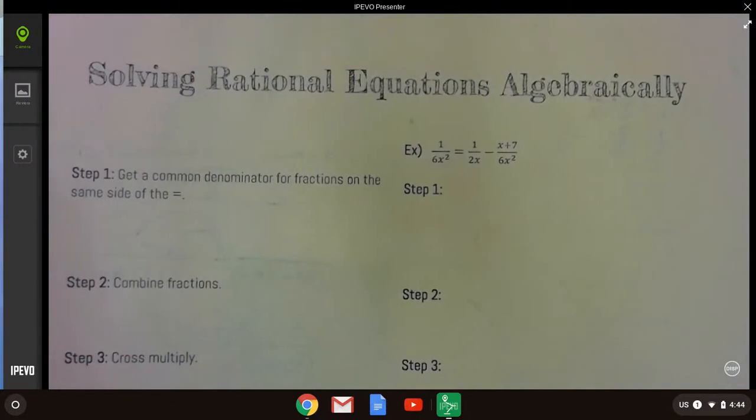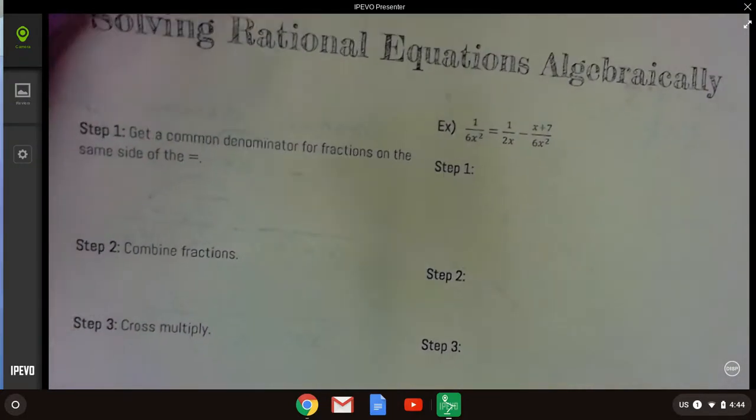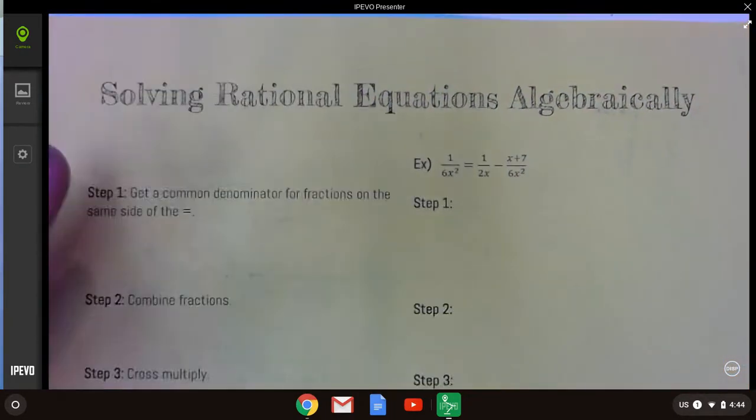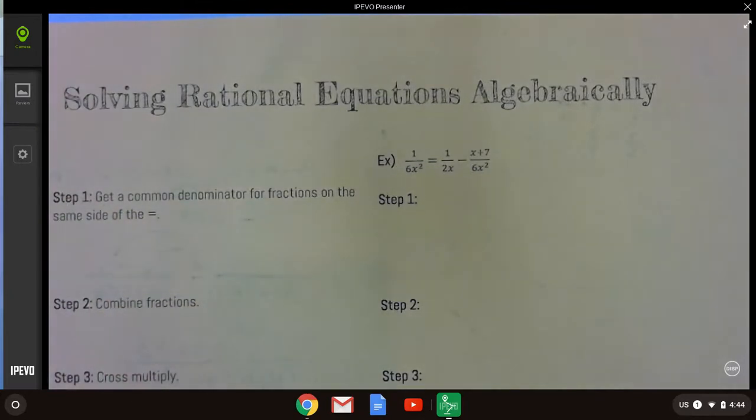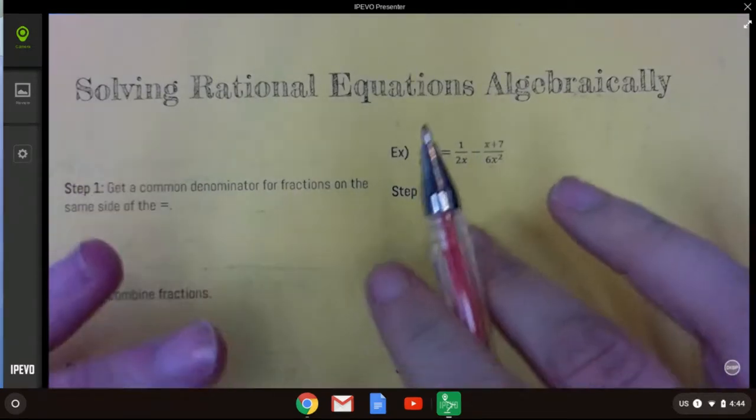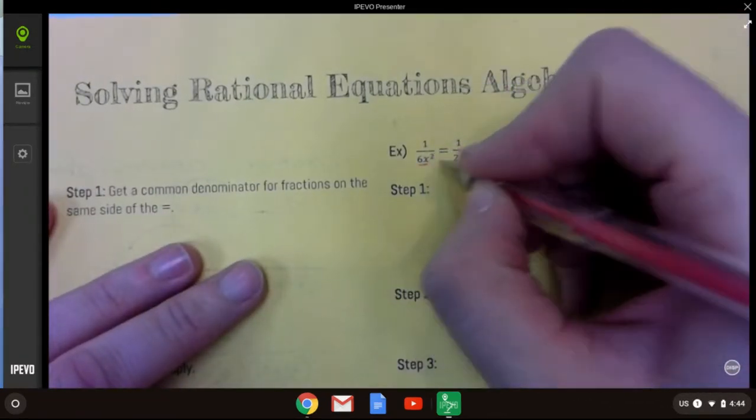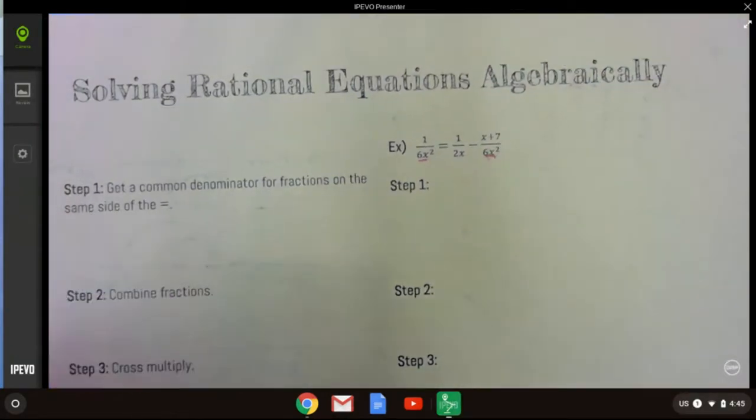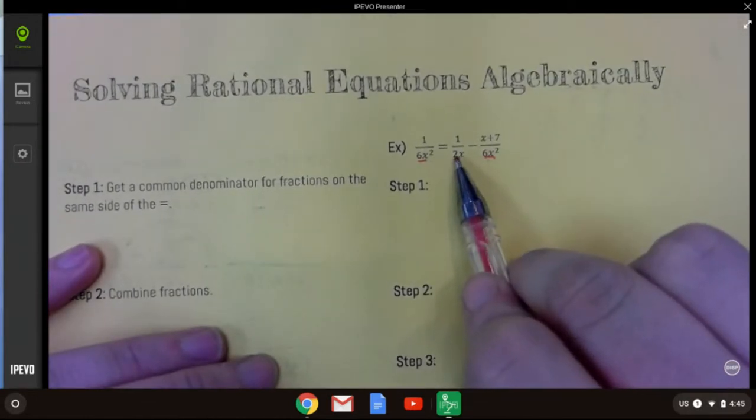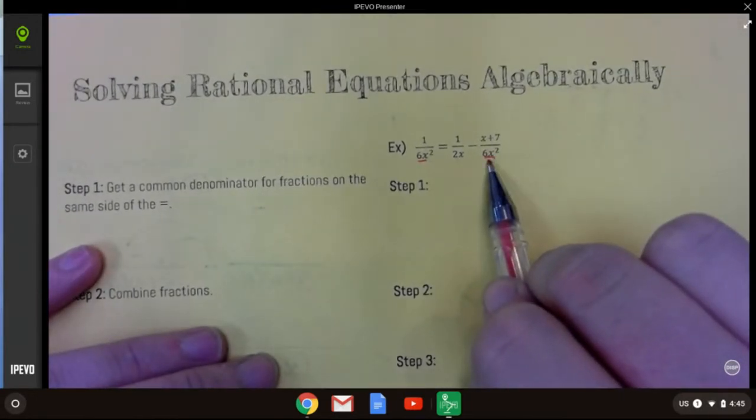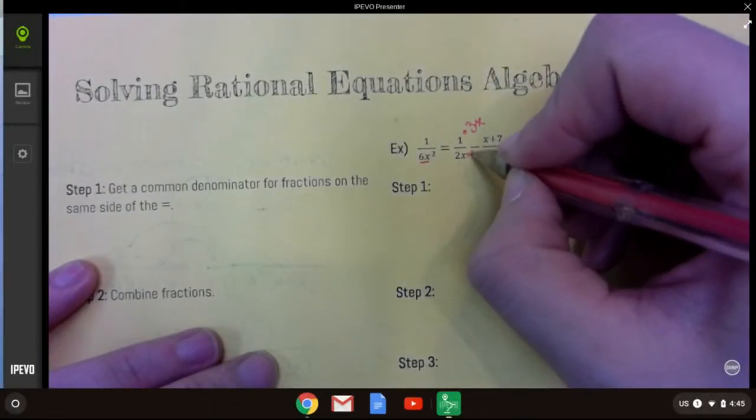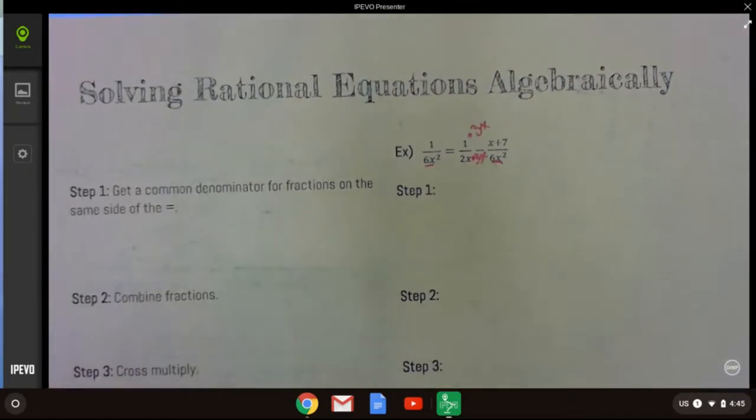Okay, so we're going to be finding common denominators just like we did here. Same concept. Now, what I strongly recommend you doing is carefully examining your denominators to see if there's anything they have in common. And you'll notice that this dude and this dude are the same, so leave them alone if possible. Then our other denominator, can we make 2x into 6x squared? Why, yes, we can. If we multiply it by 3x and 3x, then we can sure make them all the same.